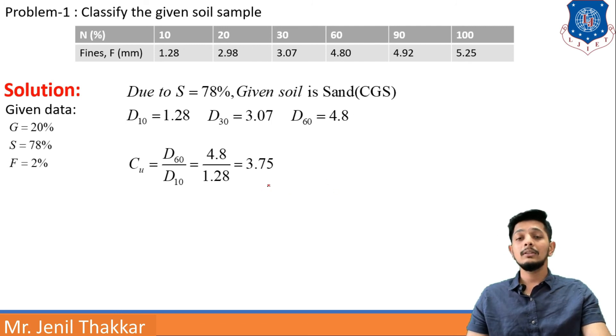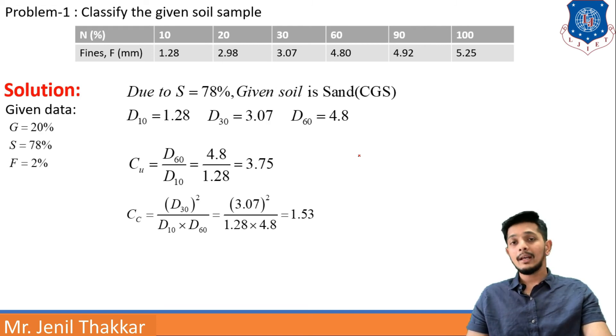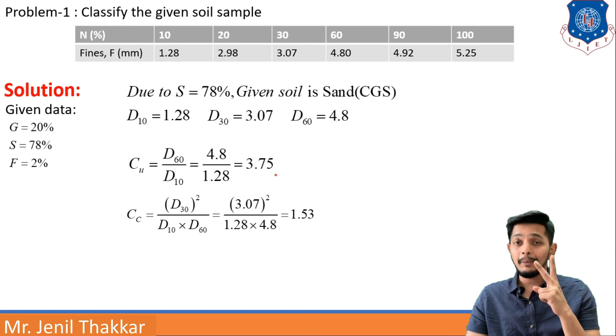Now Cu comes out as 3.75 and if I find out Cc from the formula D30 square upon D10 into D60. Putting D30 at 3.07, D10 as 1.28 and D60 as 4.8, I am getting Cc value as 1.53. Now I have to remember Cu and Cc table.